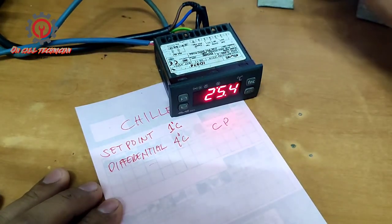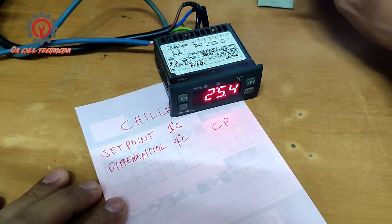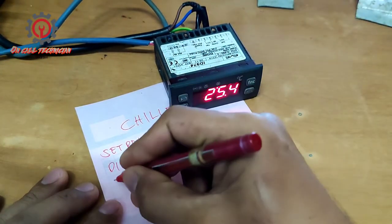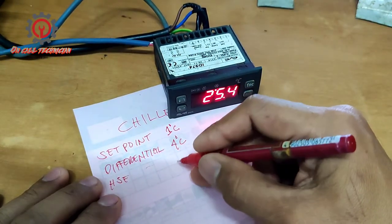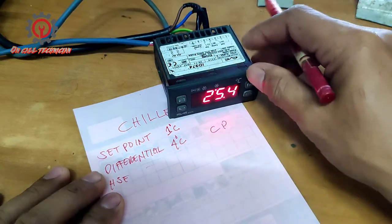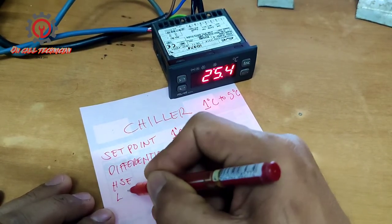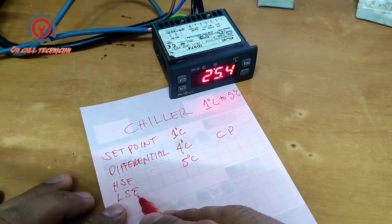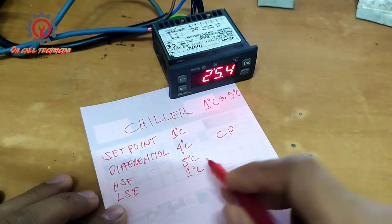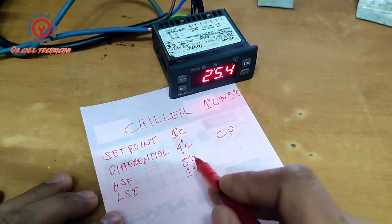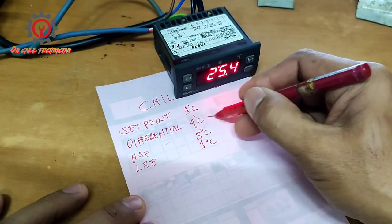If you wish to change the HSE, which is the highest set point, I'm going to set the highest set point to five degrees Celsius. We also have the LSE, which stands for lowest set point, and my lowest set point is one degree Celsius. These two are also under the CP folder, and it's up to you whether you want to set these values.